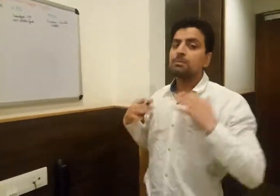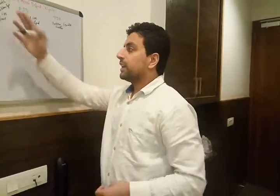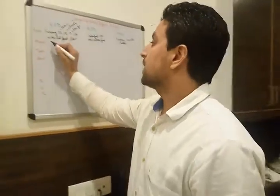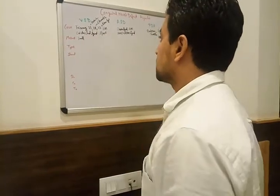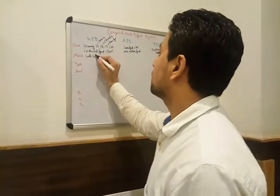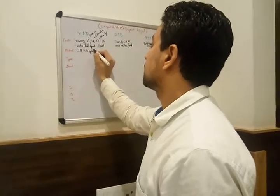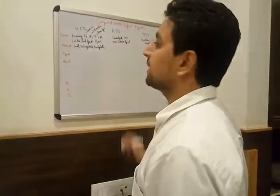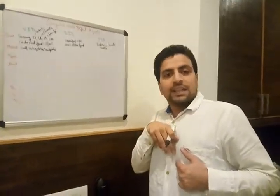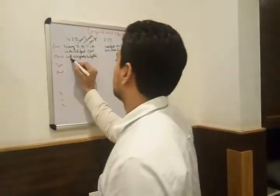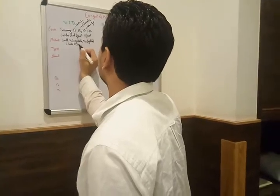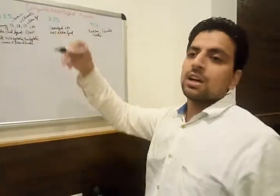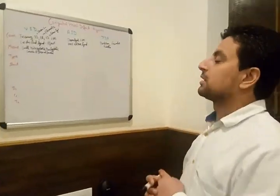Now I am going to explain the murmurs. In ventricular septal defect, if there is a small hole, the murmur is holosystolic — also called pansystolic. We listen to this murmur at the left lower sternal border. If the hole is larger, we may also hear a diastolic murmur.